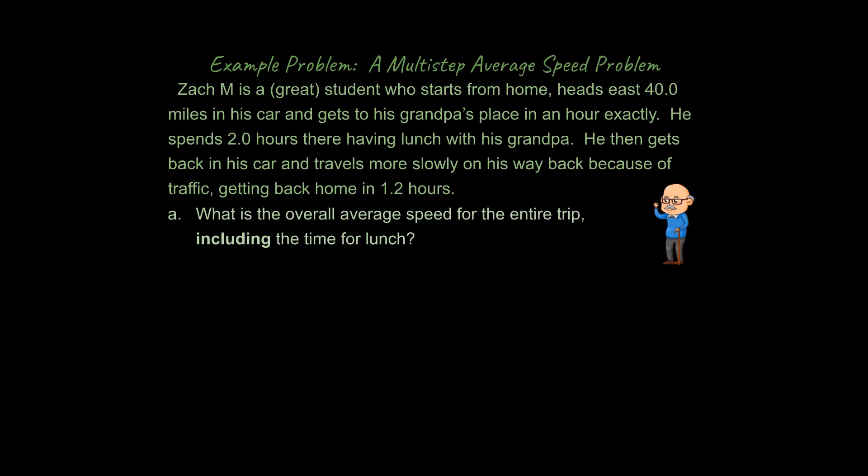And so let me help you out with a multi-step average speed problem. If we take a look at this one, it says Zach M is a great student who starts from home, heads east 40 miles in his car, and gets to his grandpa's place in an hour exactly. He spends two hours there having lunch with his grandpa. He then gets back in his car, travels more slowly on his way back because of the traffic, getting back home in 1.2 hours. What is the overall average speed for the entire trip, including the time for lunch?